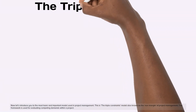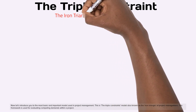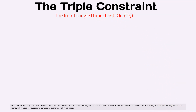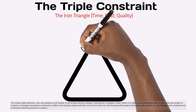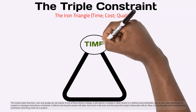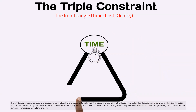Now let's introduce you to the most basic and important model used in project management. This is the triple constraints model, also known as the iron triangle of project management. This framework is used for evaluating competing demands within a project. The model states that time, cost, and quality are all related. If one of these factors changes, it will lead to a change in other factors in a defined and predictable way.